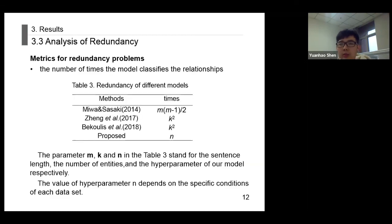How to evaluate the redundancy problem of each model? When the number of triples in the sample is known, the more the model classifies the relationship, the more serious the redundancy problem. That means the redundancy is proportional to the number of times the model classifies the relations. So we use the number to evaluate and compare the redundancy of different models. Based on the above analysis, we obtained a statistical table as shown in Table 3.